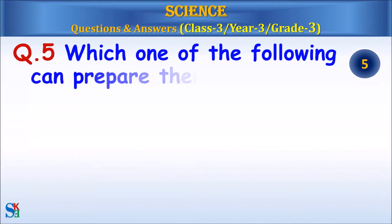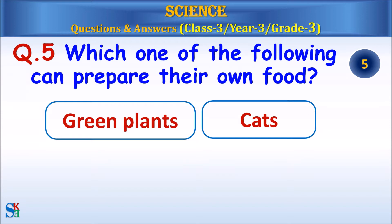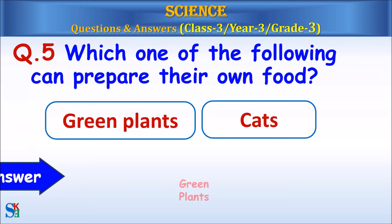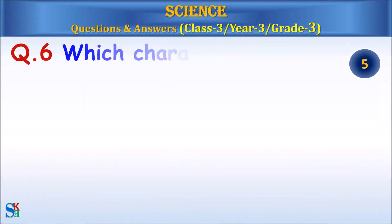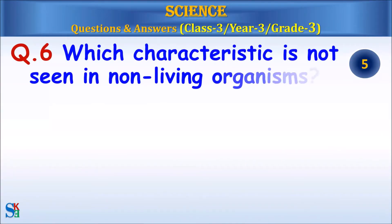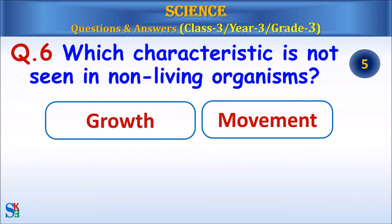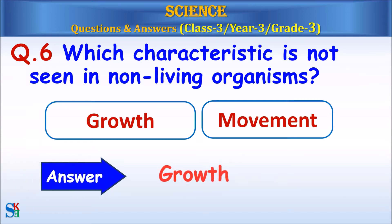Question 5: Which one of the following can prepare their own food — green plants or cats? Answer: Green plants. Question 6: Which characteristic is not seen in non-living organisms — growth or movement? Answer: Growth.